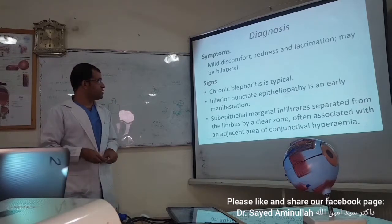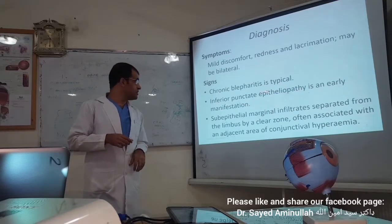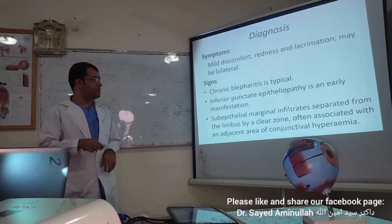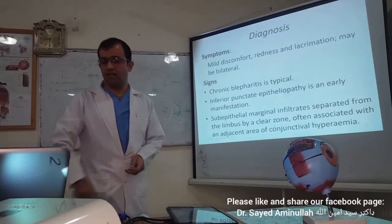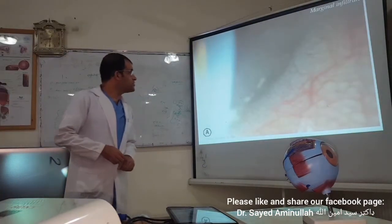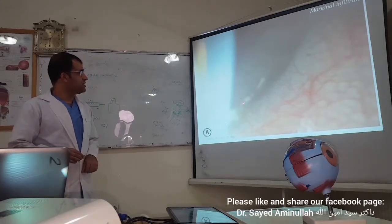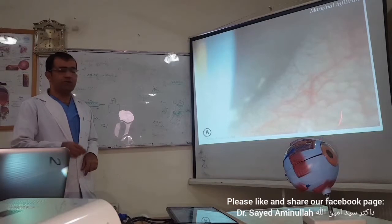So do not forget: chronic blepharitis is present, and with it, subepithelial marginal infiltrates are present. Then we say this is marginal keratitis. This is a picture of a marginal infiltrate. The picture is not very clear, but you can see the clear zone, and a localized hyperemic area.